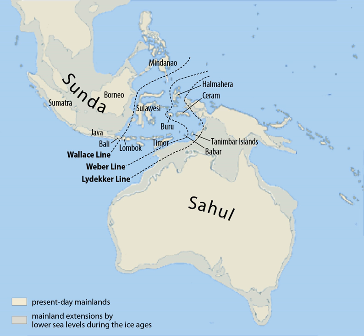Sundaland is a biogeographical region of southeastern Asia corresponding to a larger landmass that was exposed throughout the last 2.6 million years during periods when sea levels were lower. It includes the Malay Peninsula on the Asian mainland, as well as the large islands of Borneo, Java, and Sumatra and their surrounding islands.